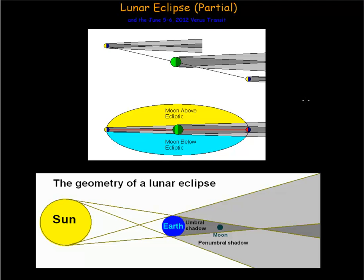Hello. Today I want to talk about a lunar eclipse — primarily a partial one — which is going to happen Monday, June 4th, 2012, as well as the Venus transit, which is going to happen in the United States on the 5th and Asia on the 6th of 2012, where Venus is going to try to eclipse the sun. But anyway, back to the partial eclipse.